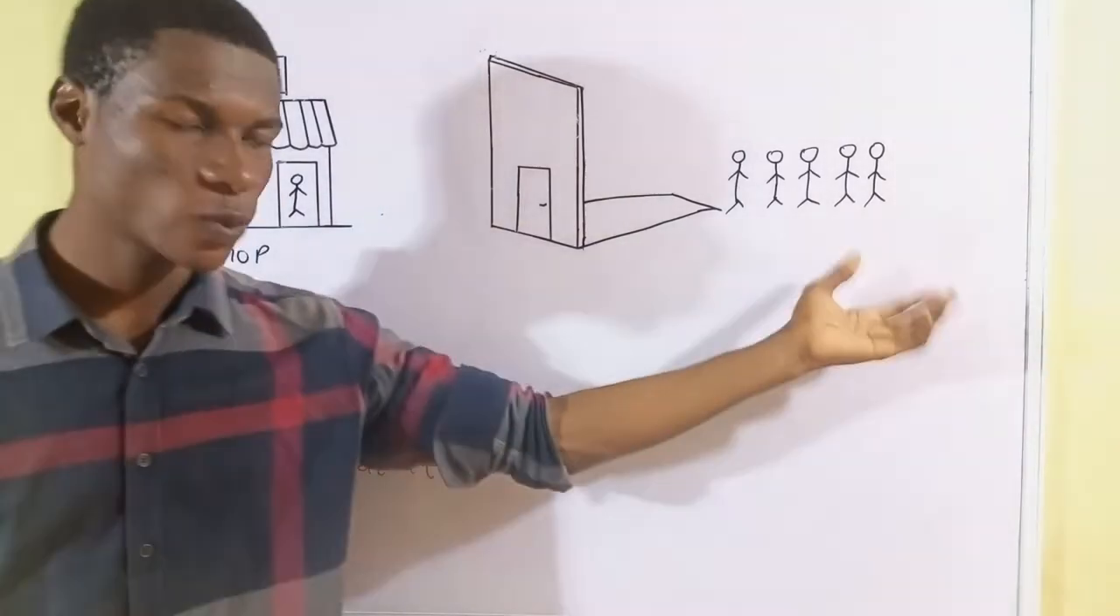So the second principle is that one customer at a time. So this means that the shop can only attend to one customer per time, and that's the function of this man standing here. So whenever a customer is attended to and they need to get the next customer, this guy shouts 'next'. The next youngest person in this queue will enter through this door and will be attended to. So this door serves as a demarcation between the guy standing here and the customers waiting to buy milk. That is the second principle: only one customer can be attended to at a time.